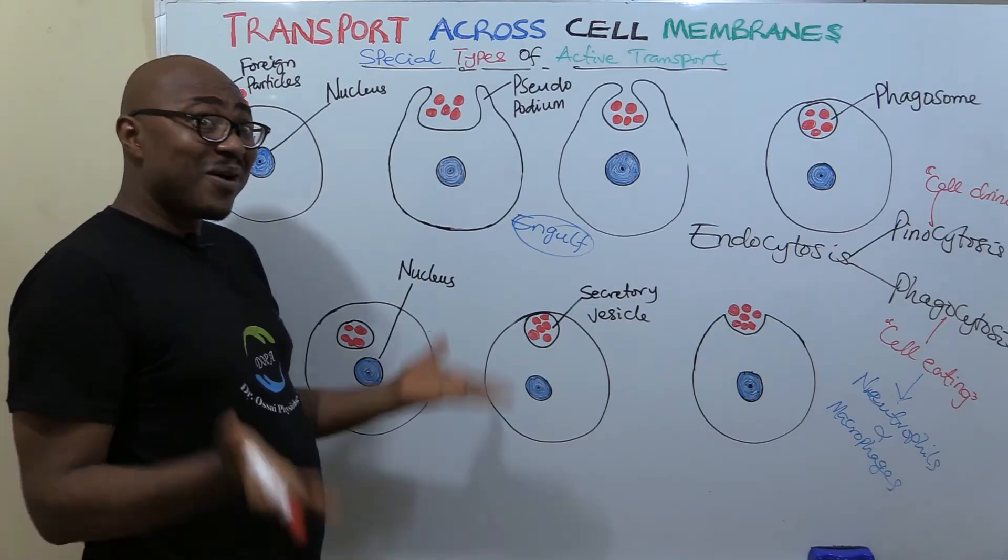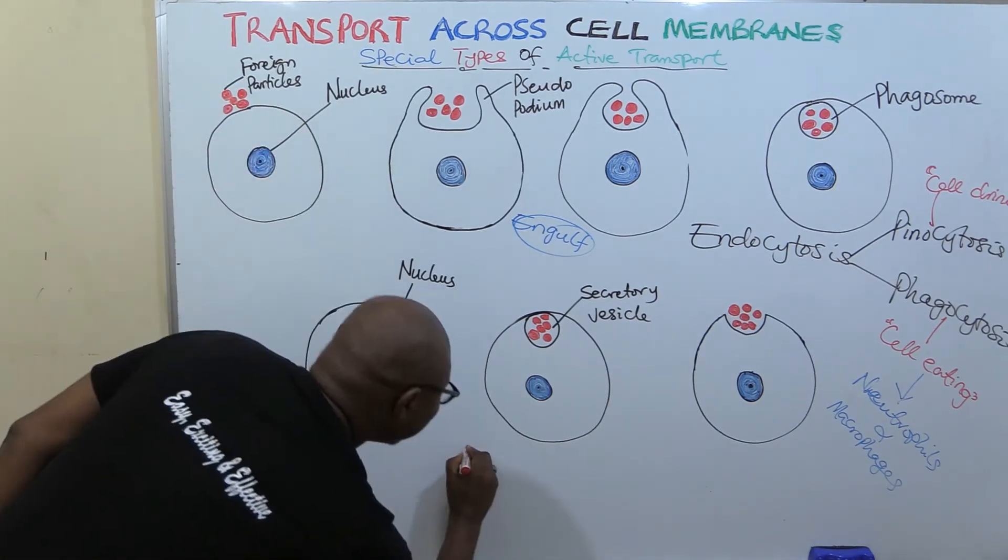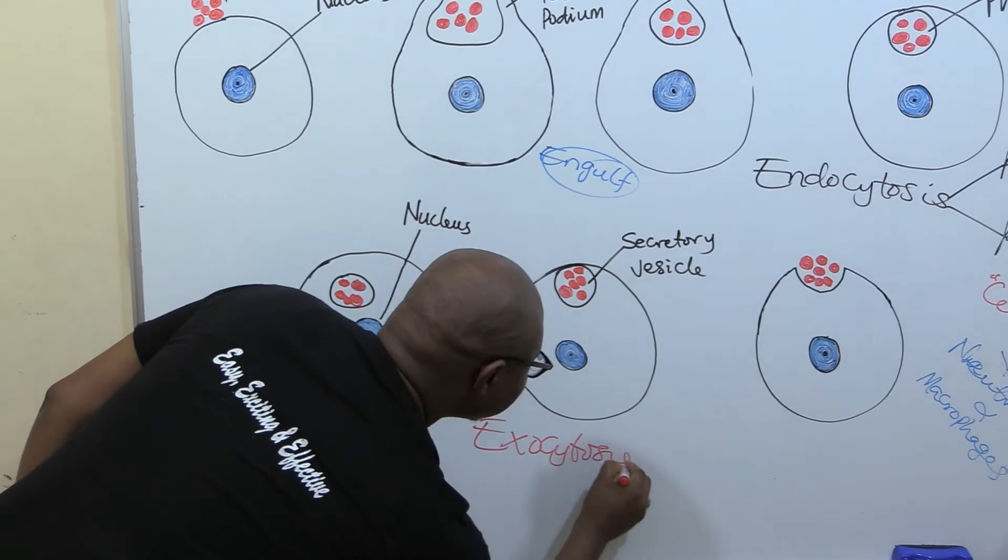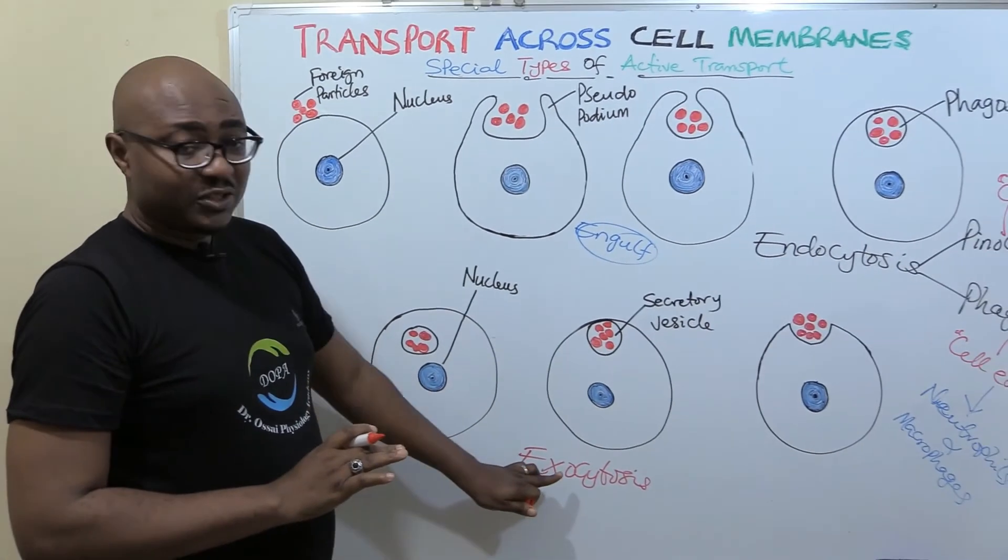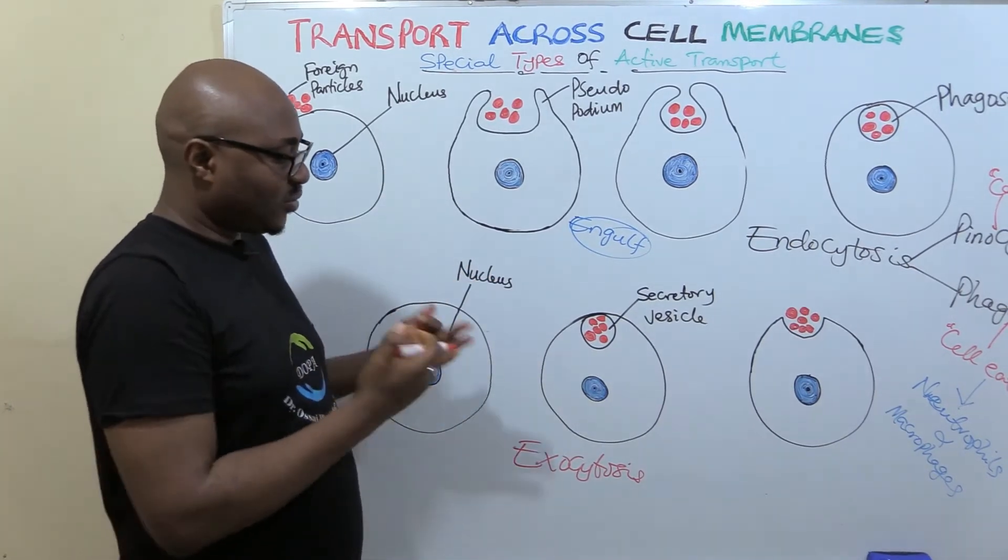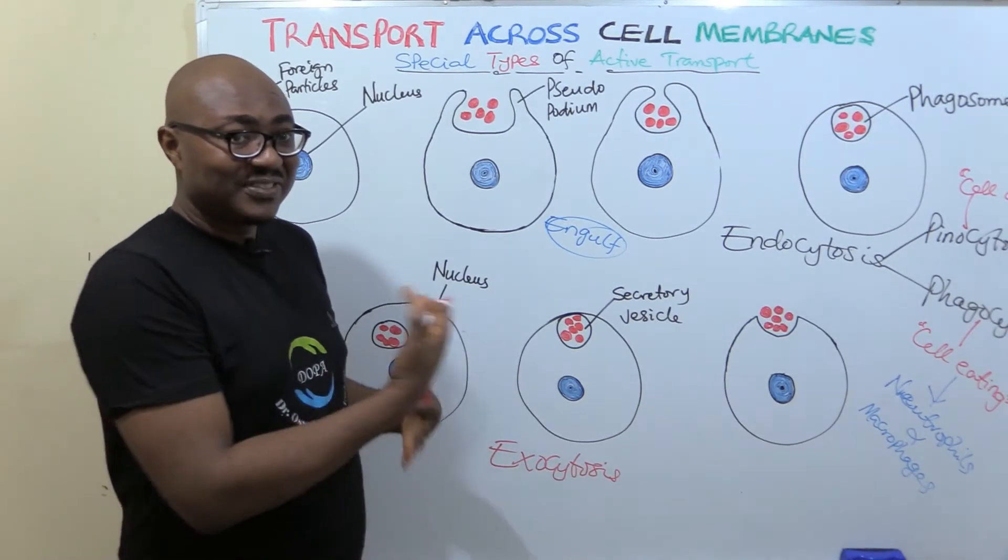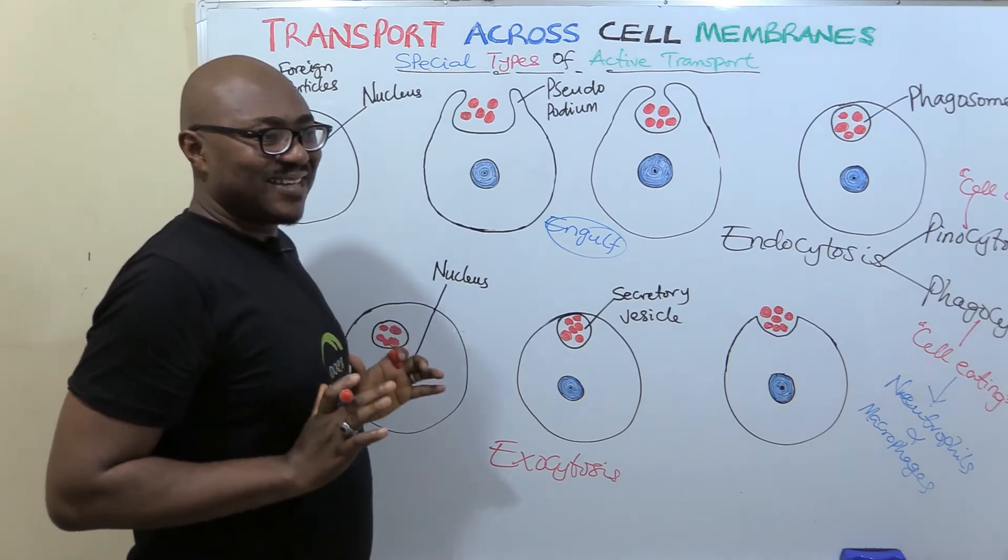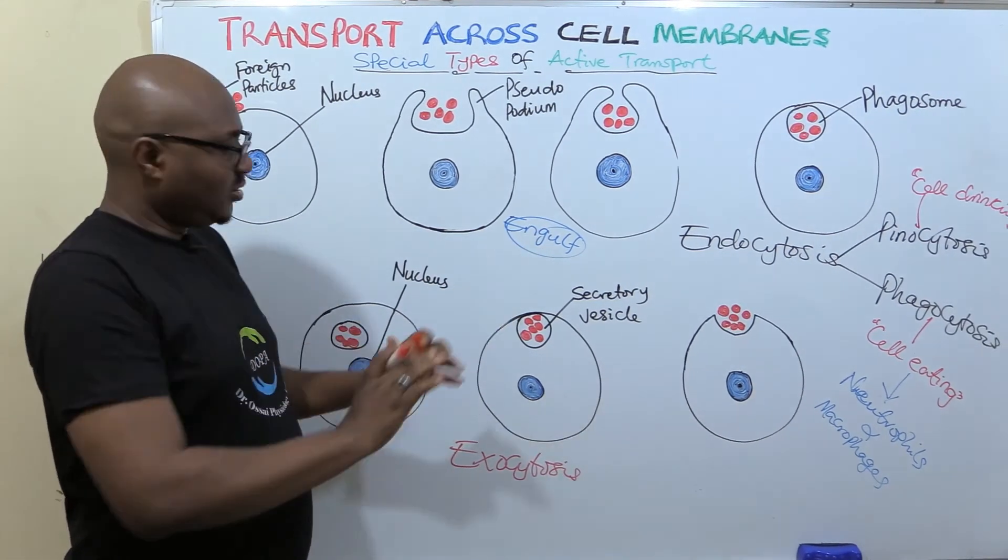All right, welcome back. So now let's talk about exocytosis. Always remember that physiology is English. Endo means in, exo means out. Sight, anything sight, they're talking of cell. So it's just talking about the cell taking something out.